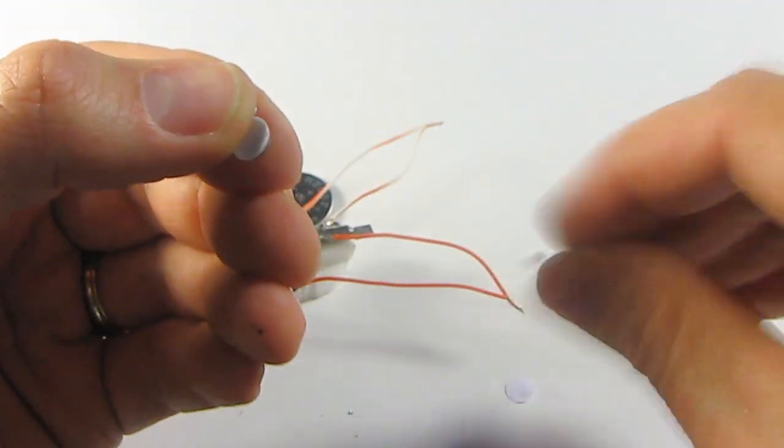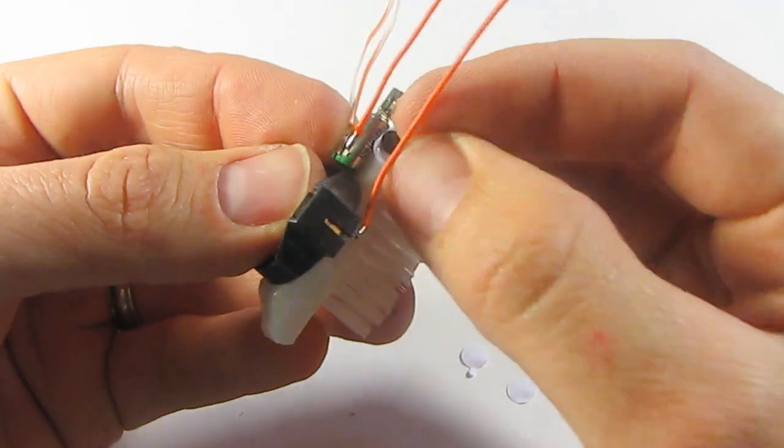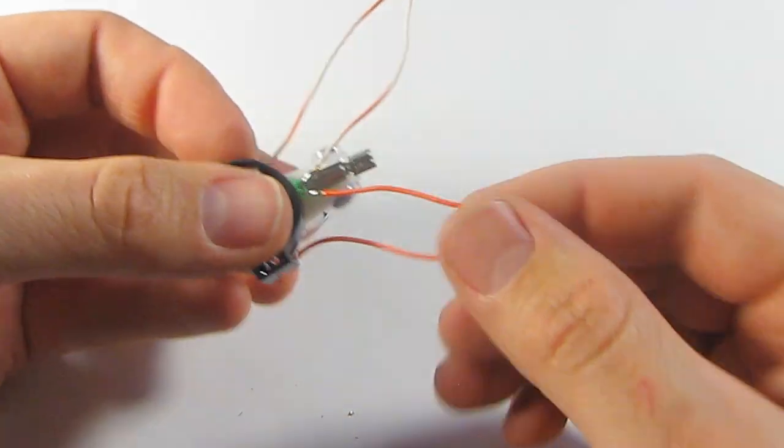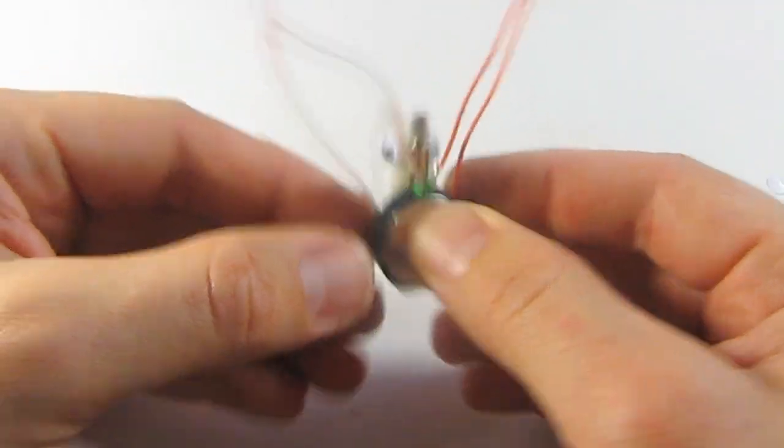Grab right there. Excellent! Now we've got our little brush bot looking so nice and cute, like a little bug. Now the final step is to put in the battery. Pop that in there.